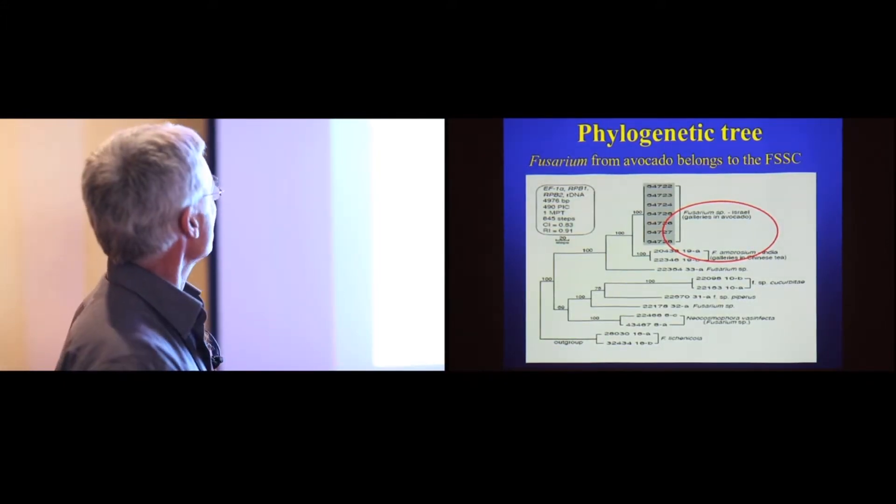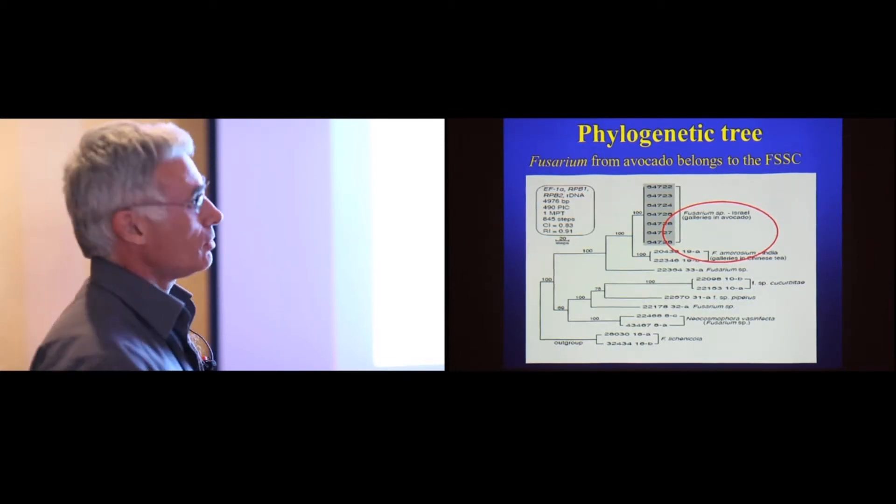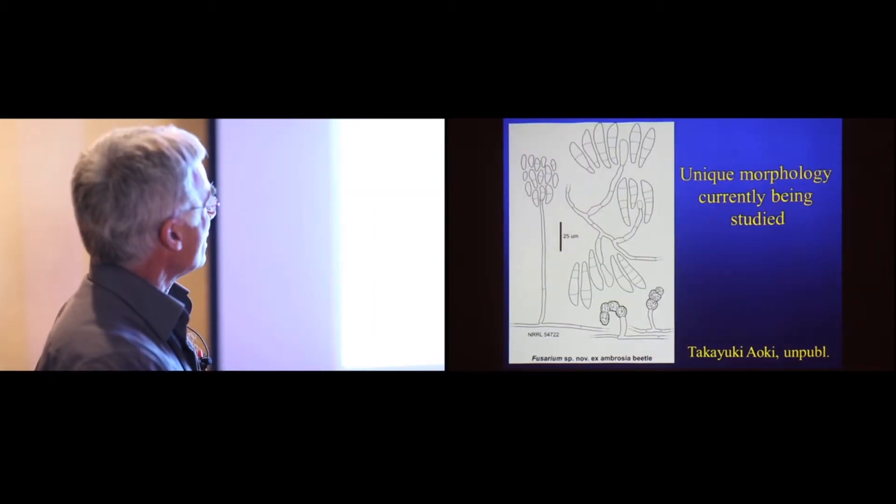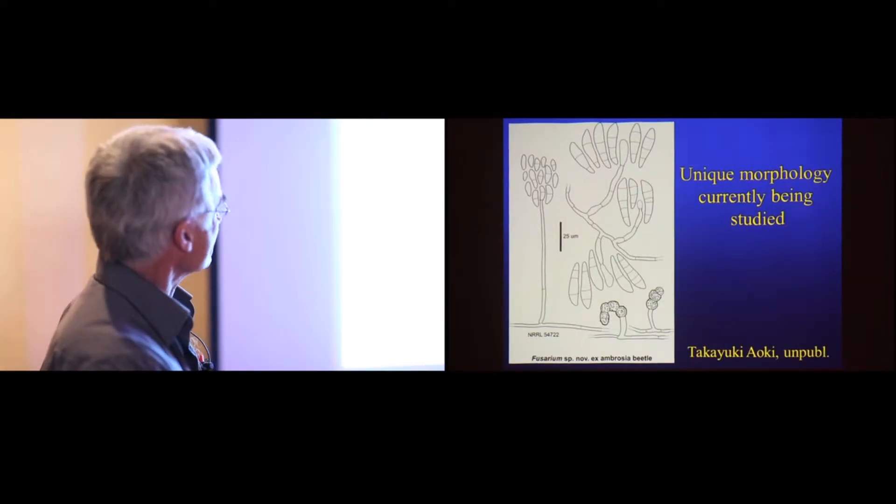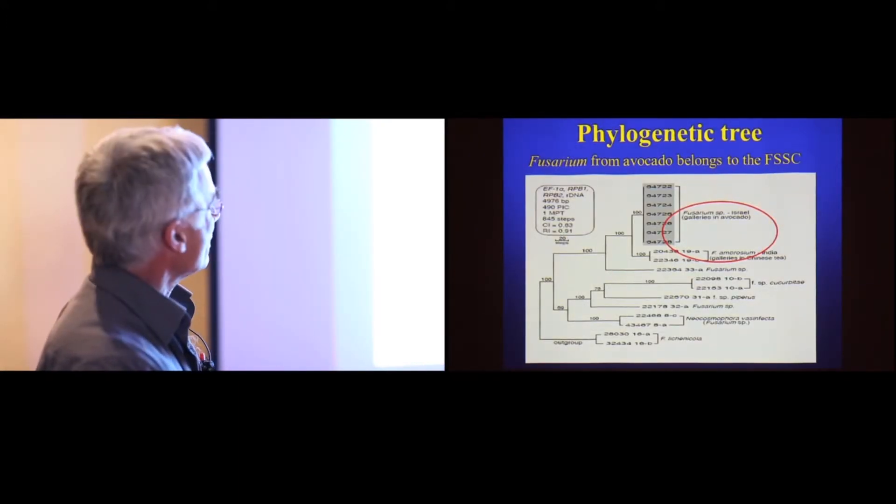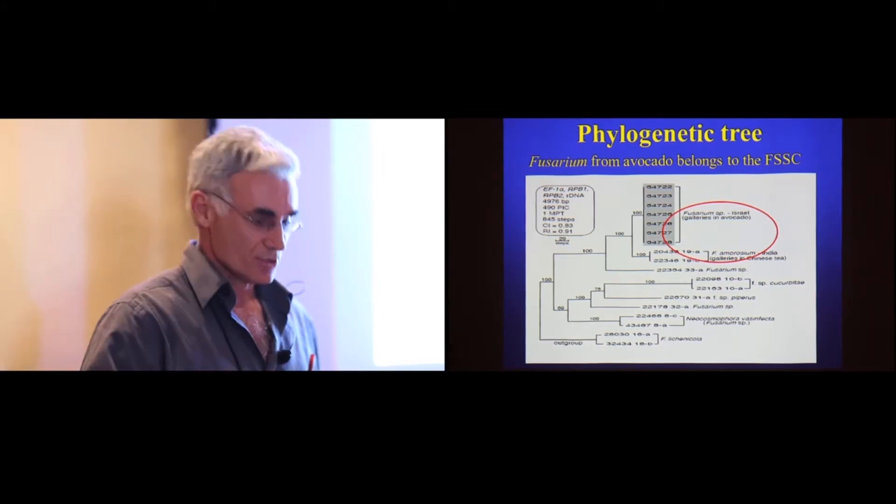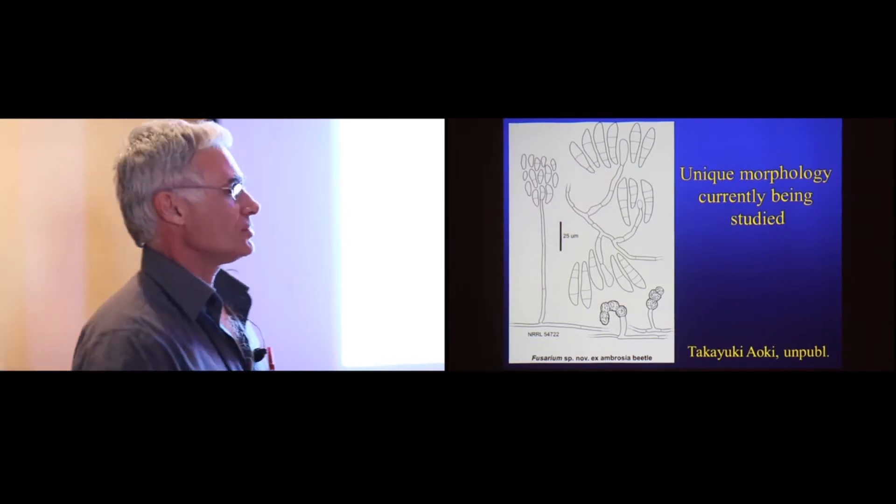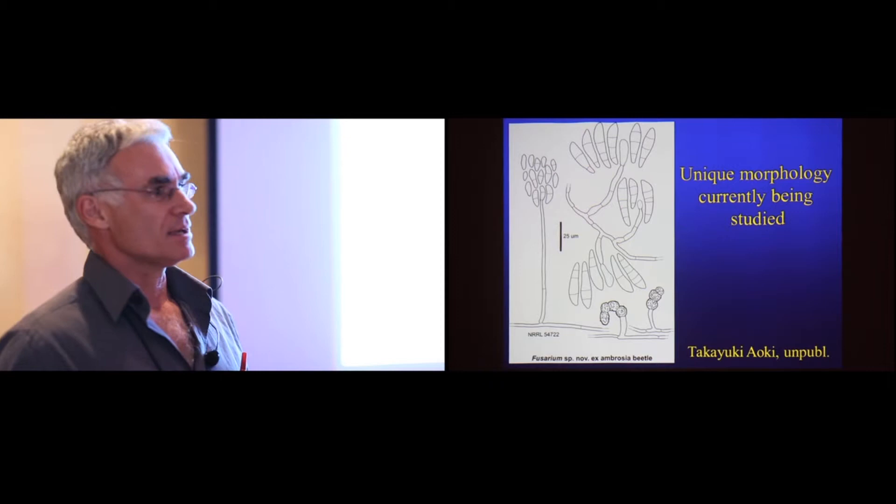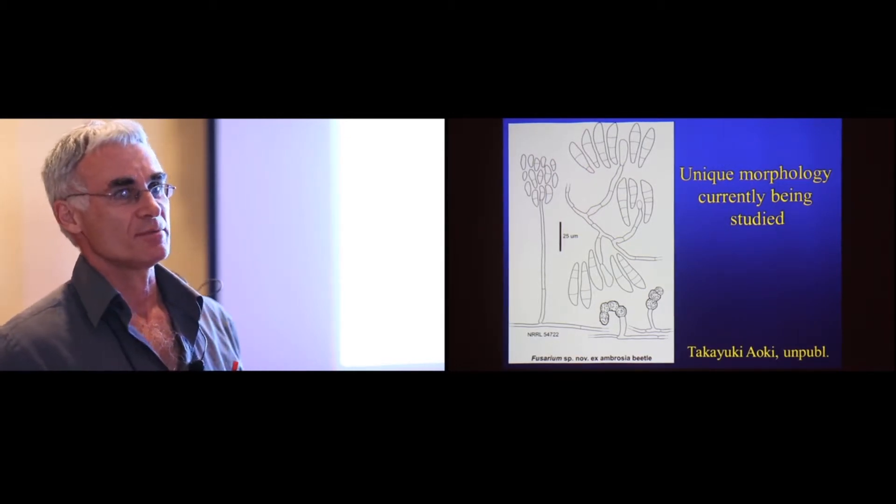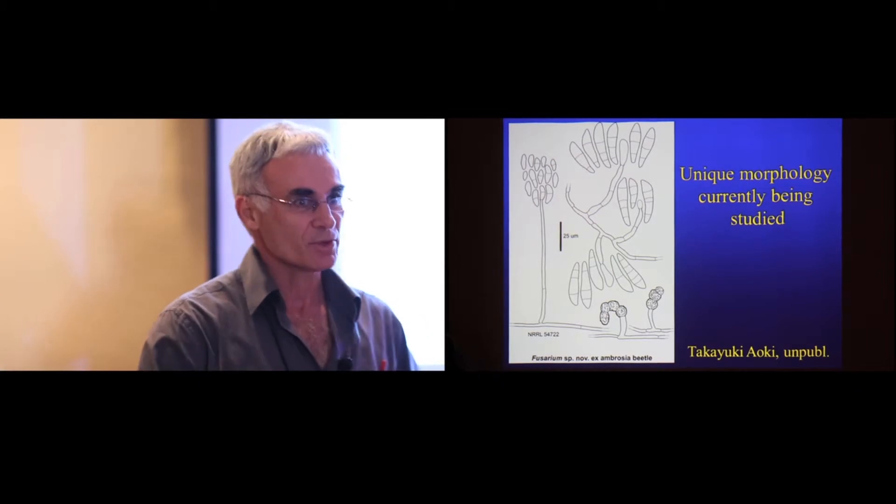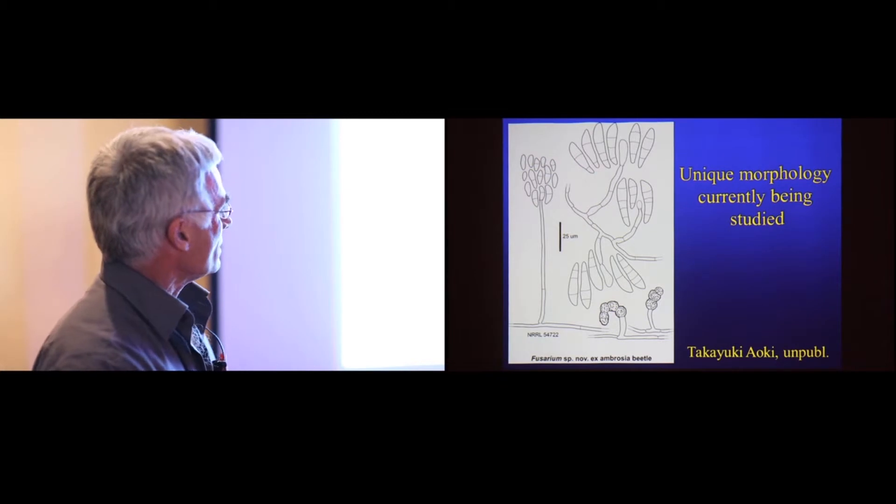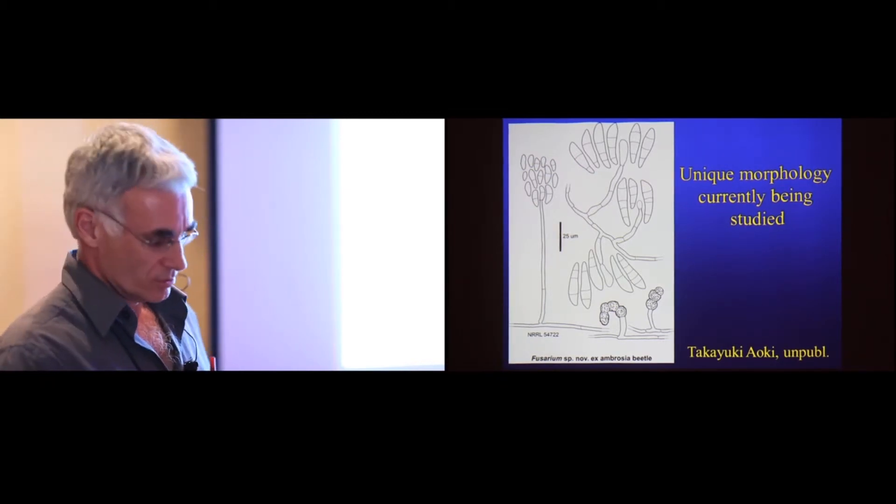In this case, Kerry did the phylogeny for us. He used multi-locus sequencing of four genes as such. And you can see it's very closely related to Fusarium ambrosium. We're collaborating now with a researcher in Japan to characterize our fungus and name it. Because at the moment, it's a Fusarium species nov. And obviously, that's unacceptable. This is ongoing work, and we should get there soon.